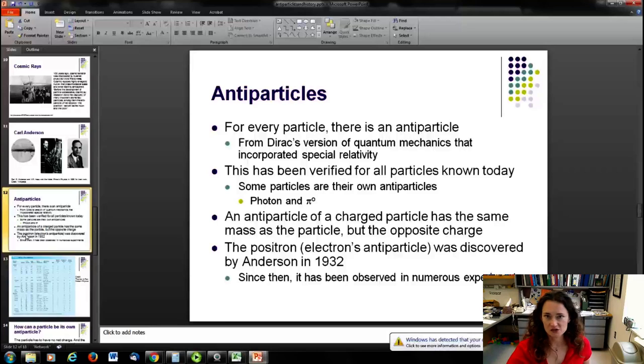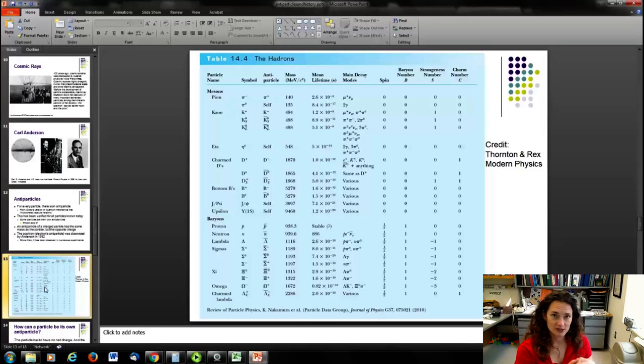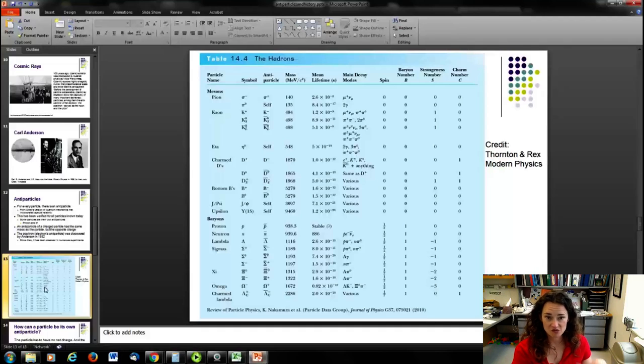Since then, the positron's been observed tons of times since 1932, as have many of these antiparticles. Now, I'm going to show you this. Please do look at it in more detail, and there's also charts in your book. These are the hadrons. We'll talk about what that means in a little bit. But basically, it's sort of a laundry list of particles with specific properties. You can see the ones that we're really familiar with down here, the protons and the neutrons, but there's lambdas, sigmas, omegas, charmed lambdas, kaons, pions, etas, and all that kind of stuff.